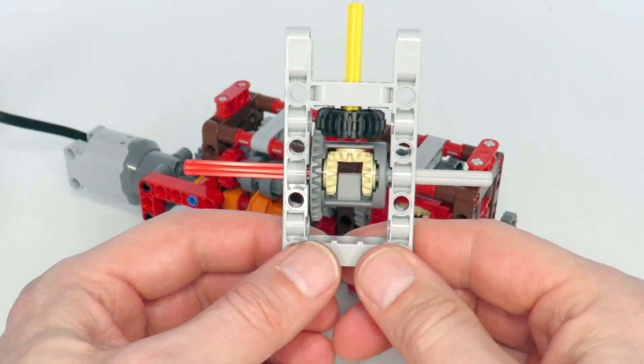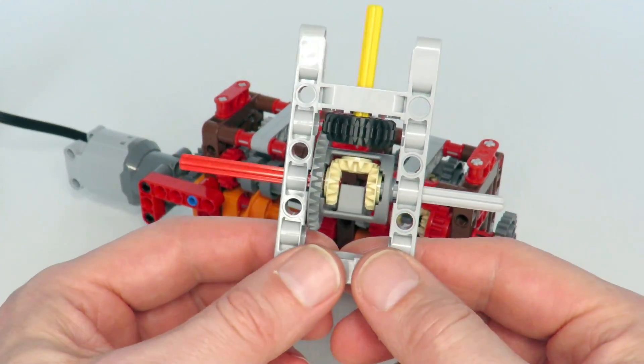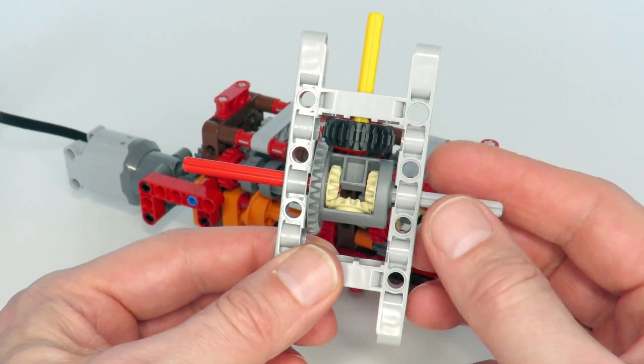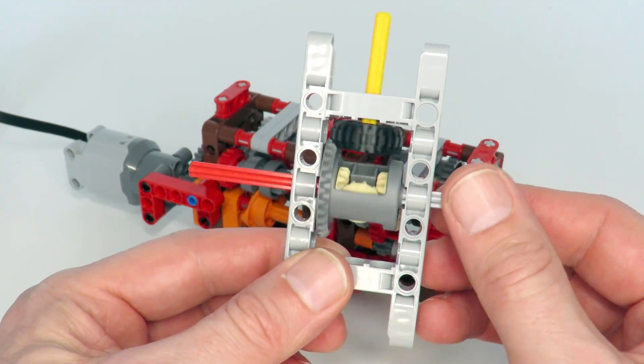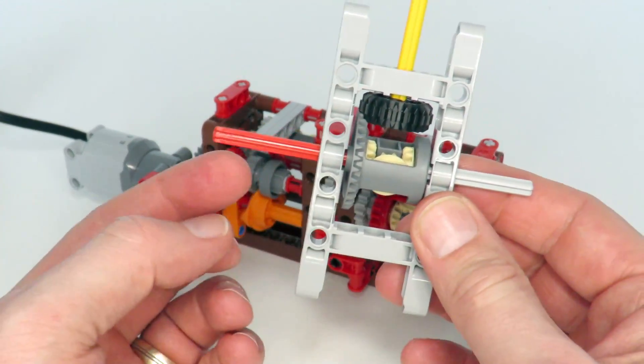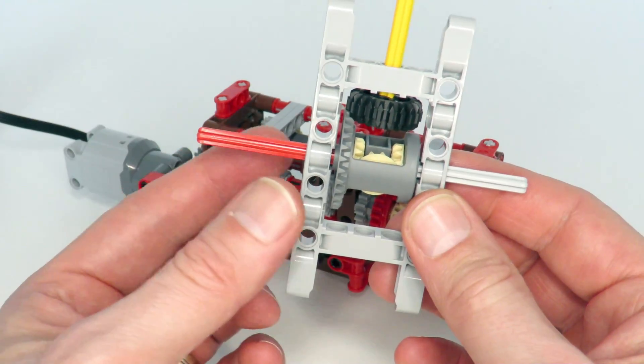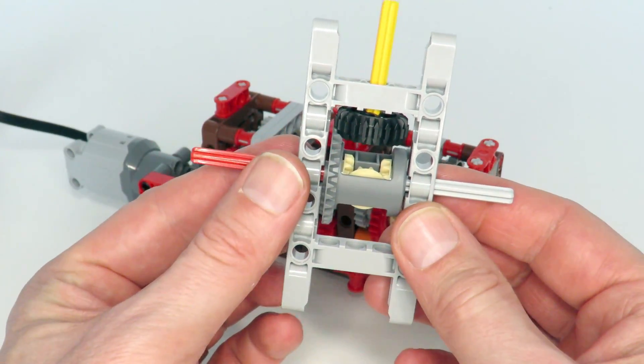So the way I went about designing this gearbox was to imagine having a differential like this always being driven, for example, on one side by a speed of one. And then the red axle represents the two gears that we're switching between. So, for example, the red axle might switch between the speed of zero.